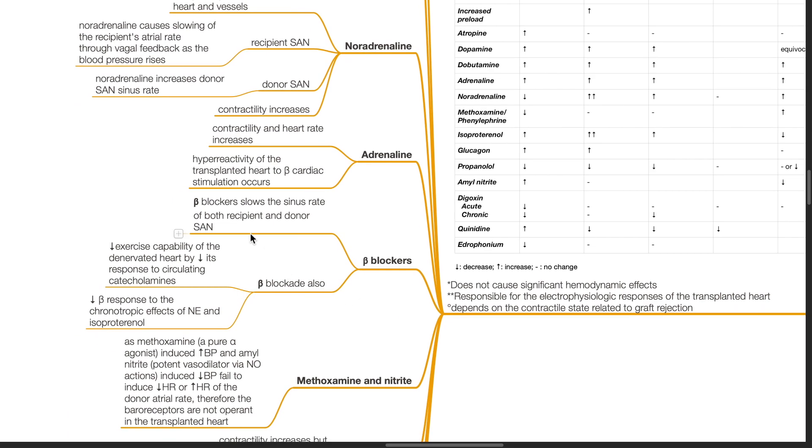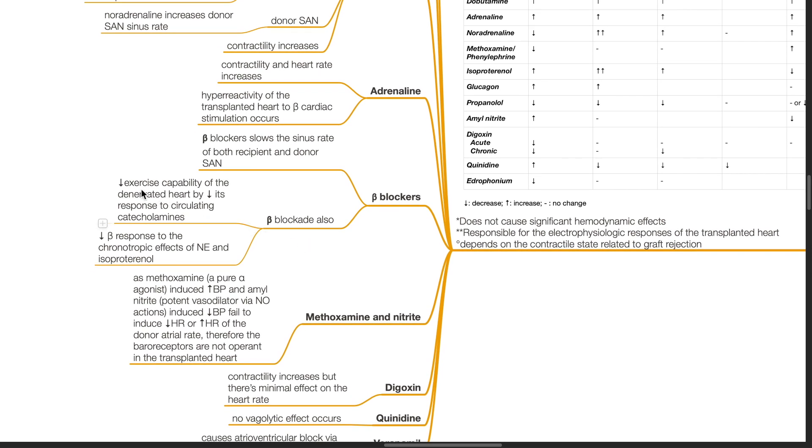Beta blockers slow the sinus rate of both recipient and donor sinoatrial nodes. Beta blockade also decreases the exercise capacity of the denervated heart by decreasing its response to circulating catecholamines. There is a decreased beta response to the chronotropic effects of noradrenaline and isoproterenol.